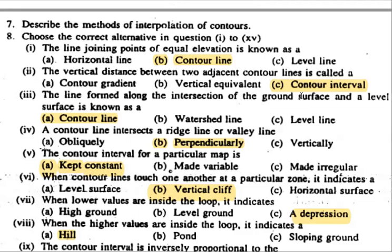Next question: The line formed along the intersection of the ground surface and a level surface is called a contour line. It represents points of equal elevation.